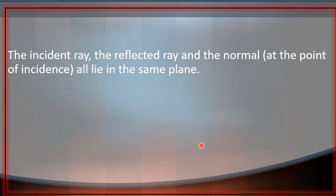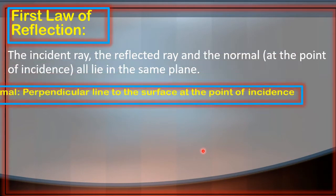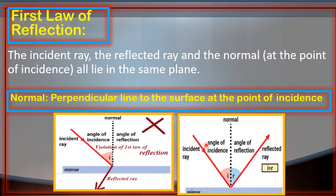Students light को एक straight line और arrowhead की मदद से represent किया जा सकता है. ये arrowhead हमें बताता है कि light किस direction में travel कर रही है. इसे हम Light Ray भी कहते हैं. अब जैसा कि हम जानते हैं कि जब भी light किसी object के साथ टकराती है तो वो reflect back होती है, यानि वो bounce back होती है.